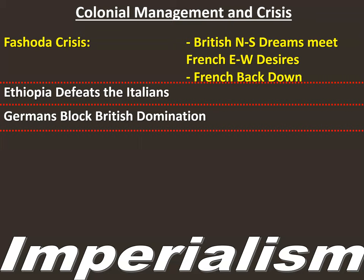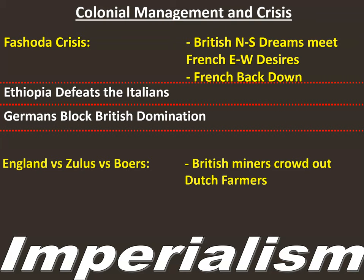The Germans begin to look at this and say they want to become a rival to the British world empire. So they begin to try to block British domination, mostly by going to southern Africa and working both eastward and westward toward the center to choke off Britain's claims — while Britain itself is trying to move north from South Africa and south from Egypt.